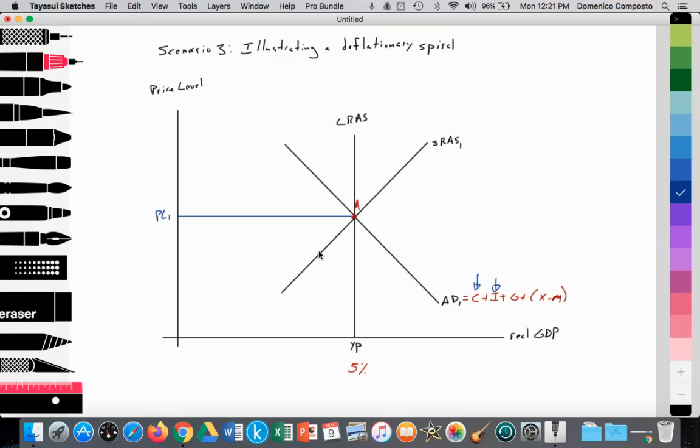So let's say it goes to this point, AD2. And we're going to assume that the price level has fallen from PL1 to PL2. Here's a new equilibrium where AD2 equals SRAS1. And we are falling into a recessionary gap. Output has fallen from YP to YR1.